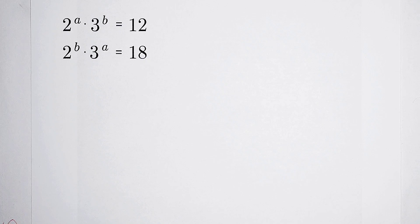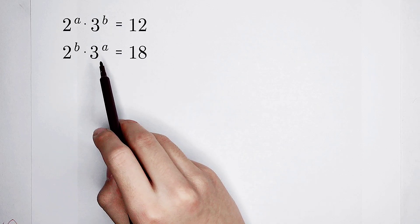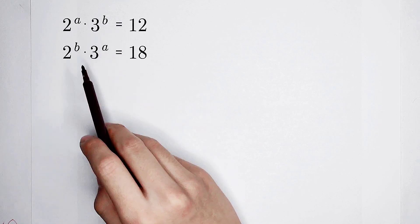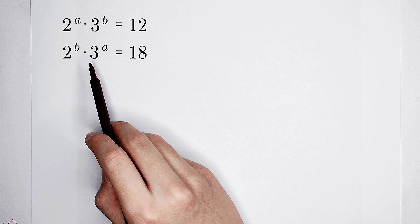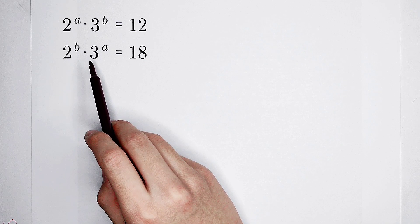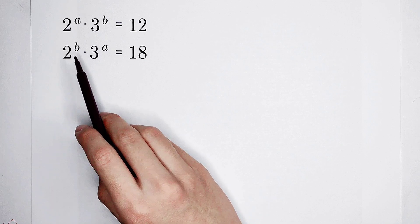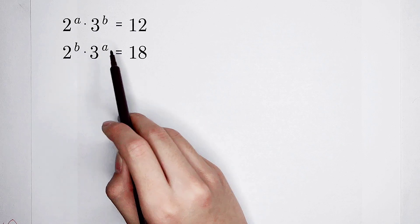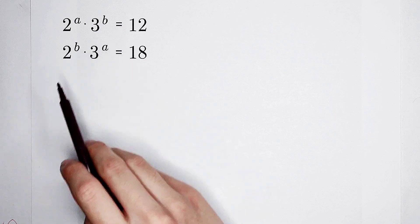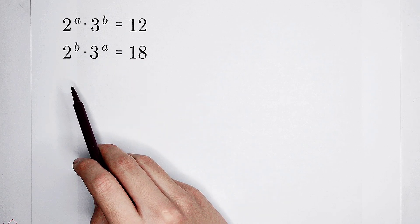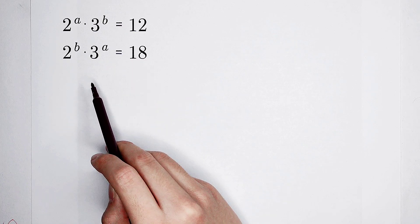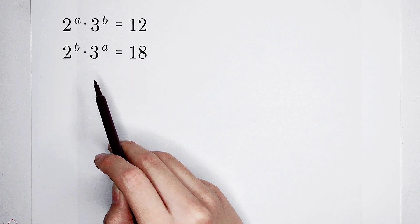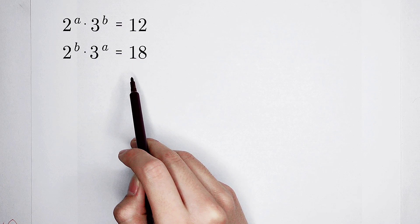Welcome back to Math Winnow. Solve the value of a and b from this system of equations: 2 to the power of a times 3 to the power of b is equal to 12, and 2 to the power of b times 3 to the power of a is equal to 18.